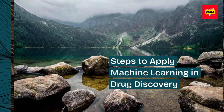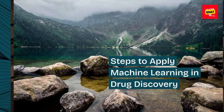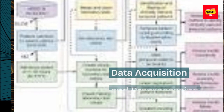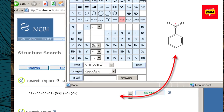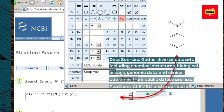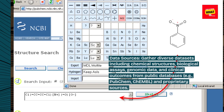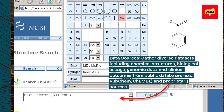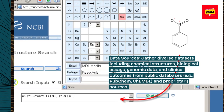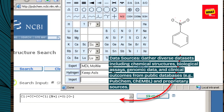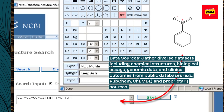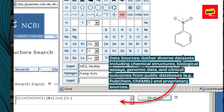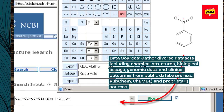Steps to apply machine learning in drug discovery. Data acquisition and preprocessing: Data sources — gather diverse datasets including chemical structures, biological assays, genomic data, and clinical outcomes from public databases, e.g., PubChem, ChEMBL, and proprietary sources.